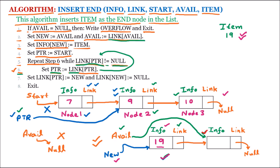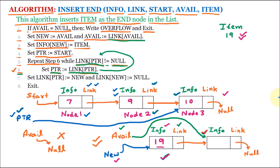So ptr is equal to link of ptr. ptr is pointing to node 2 and link of ptr is the next node, so ptr will go to node number 3 and the previous value will be discarded. Again the loop goes back and checks the condition: link of ptr not equal to null. We know that ptr is now pointing to node number 3, and the link portion of that node has null. That means this condition is false, so line number 6 will not execute.